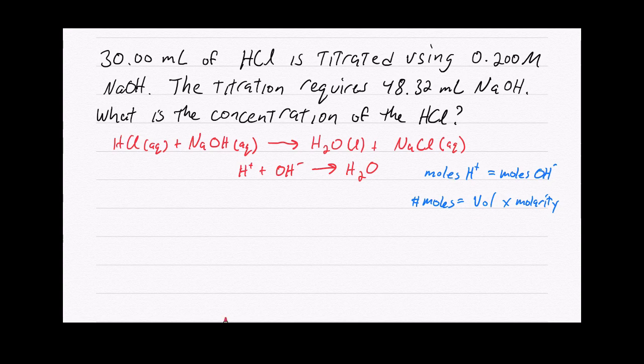The volume of the acid times the molarity of the acid is equal to the volume of the base times the molarity of the base. If we look at the things we were given in this problem, we know all of these things except for the molarity of the acid, so that's what we're going to be looking for.